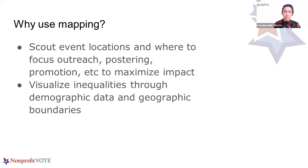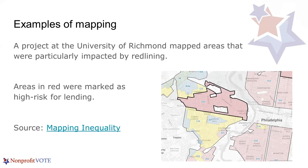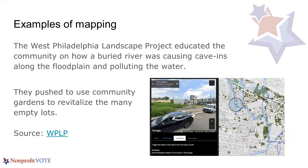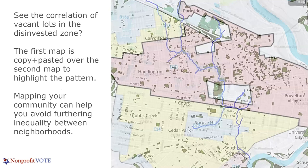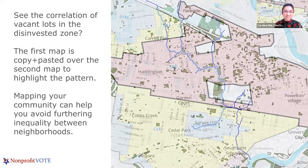Mapping can help us visualize inequalities powerfully through demographic data. Here's a salient example: this project mapped areas across the U.S. particularly impacted by redlining. This map of Philadelphia shows areas in red marked as high risk for lending, which directly impacted disinvestment in communities of color because lenders used these previously unpublished maps to exclude them from loans and home ownership. The West Philadelphia Landscape Project educated the community on how a buried river was causing cave-ins and polluting the water, and they pushed to have empty lots revitalized as community gardens. Overlaying these maps shows a clear correlation of vacant lots in the disinvested zone.